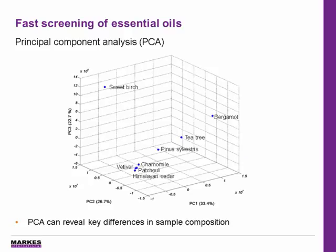Analysis of eight essential oils was completed and a template of over a hundred target compounds was prepared in GC Image software and applied to each sample in turn. The EIC peak area data was then collated to allow principal components analysis, or PCA, to be performed, and the score plot is shown on the slide here. This helps to reveal similarities and differences between samples and can be used as a fast screening method when coupled with these automated templates.